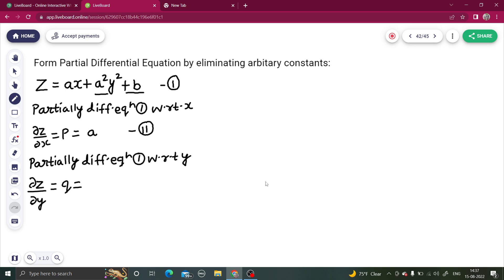In solving for del z by del y, the first term, a is a constant, x in this scenario is constant, and b, so this 2 will be 0. We will take care of only the middle term which is a square y square. So a square out, derivative of y square is 2y, giving us 2a square y.